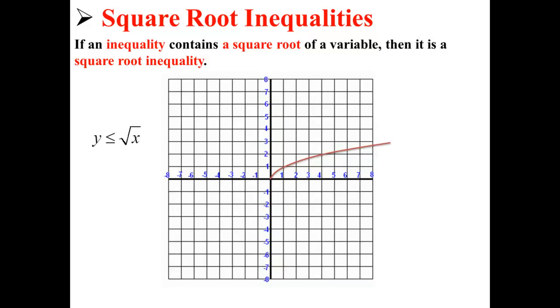Here, we've graphed our inequality on the coordinate plane. We've used a whole line because we have the less than or equal to symbol. If we just had the less than symbol, then we would have plotted a dotted line, just like with a regular inequality.